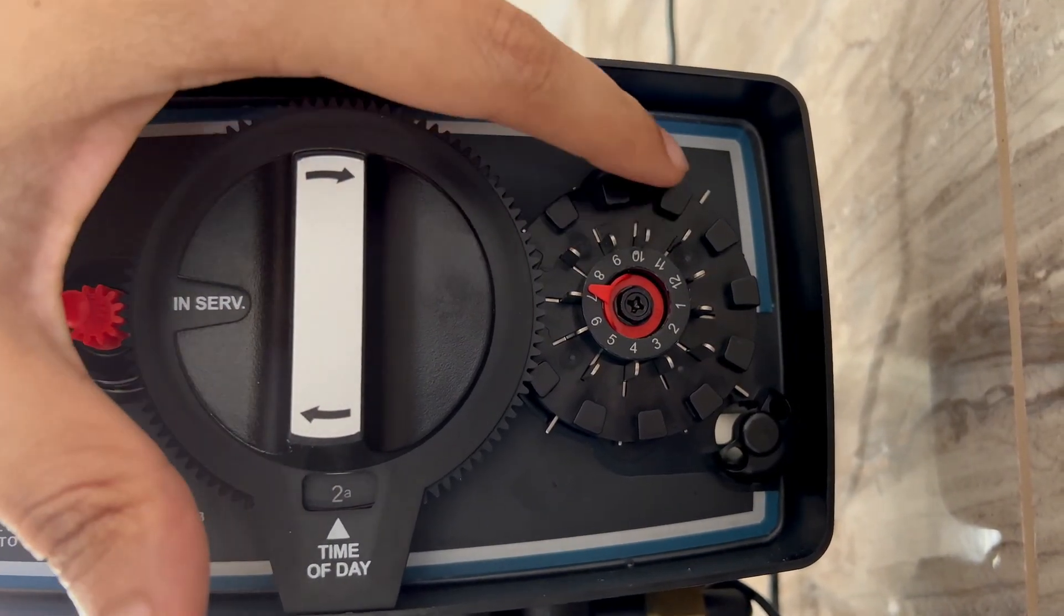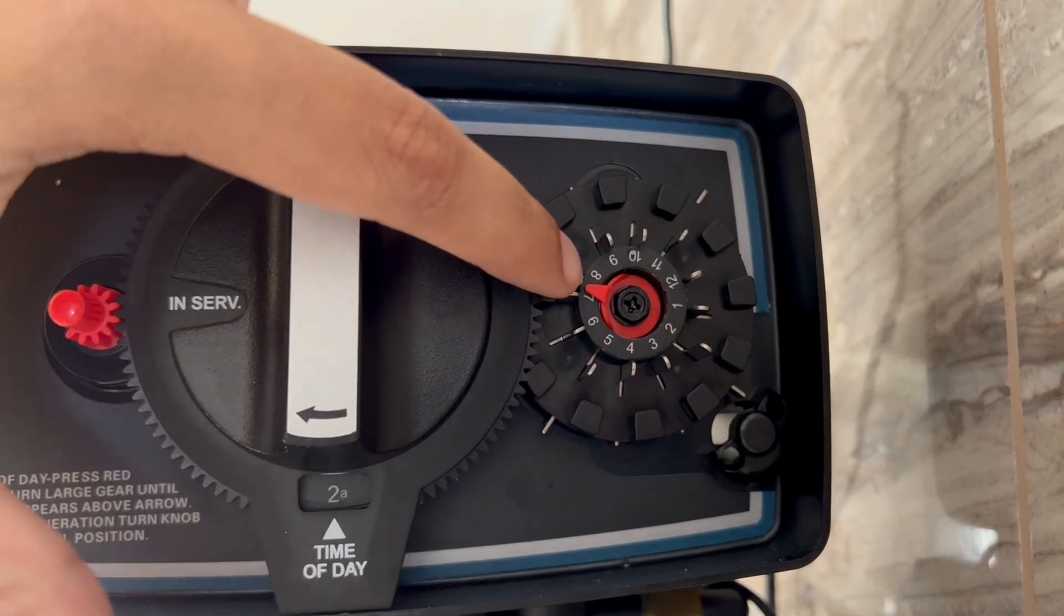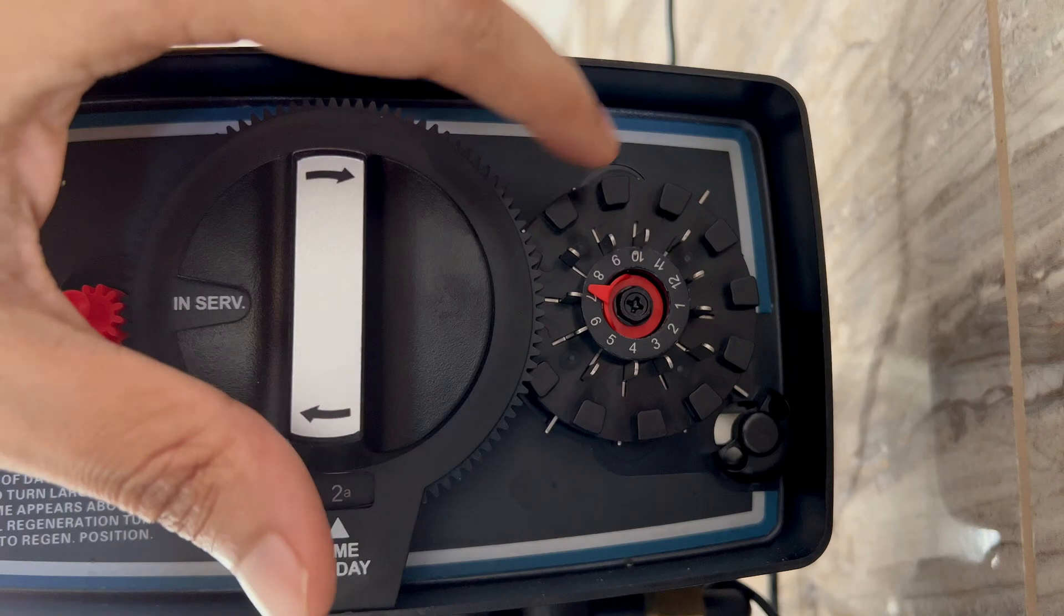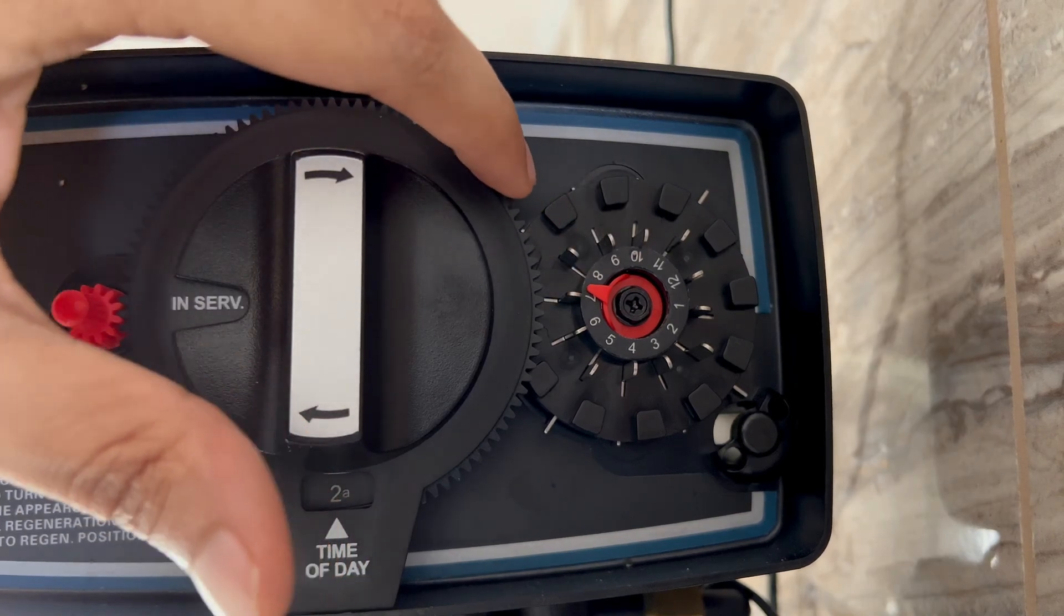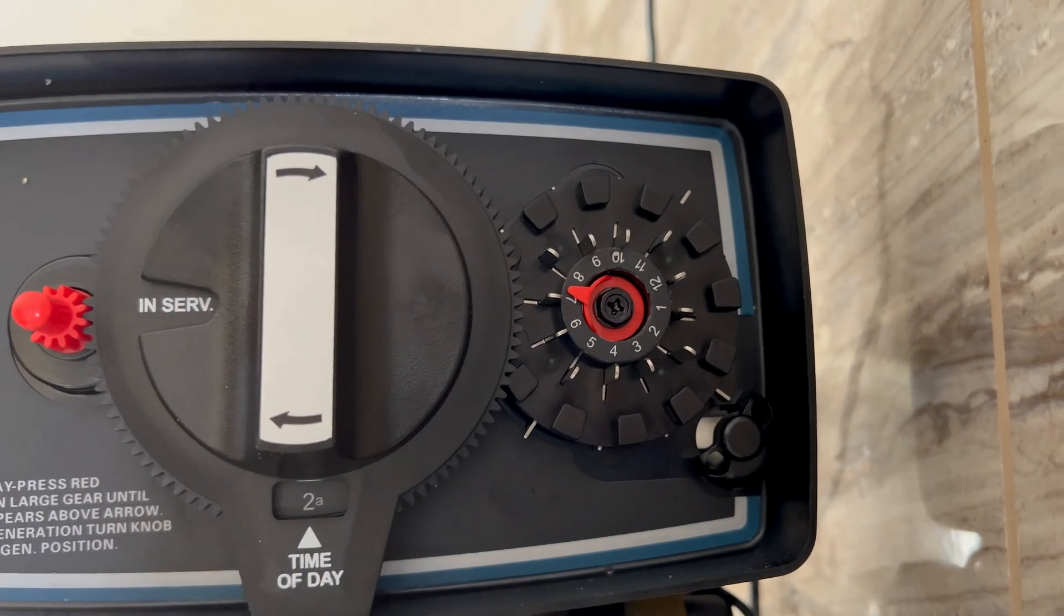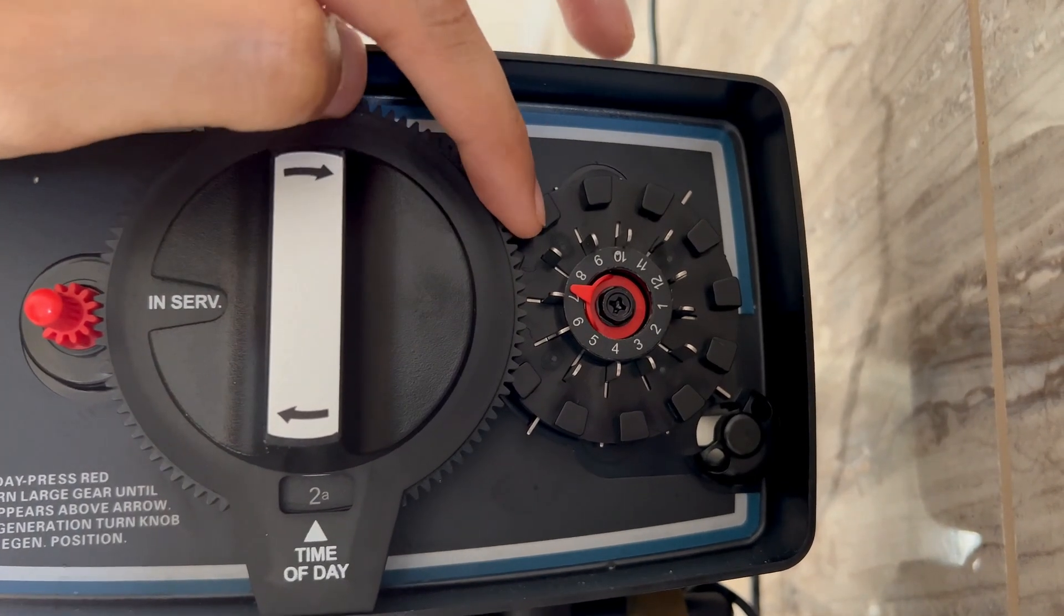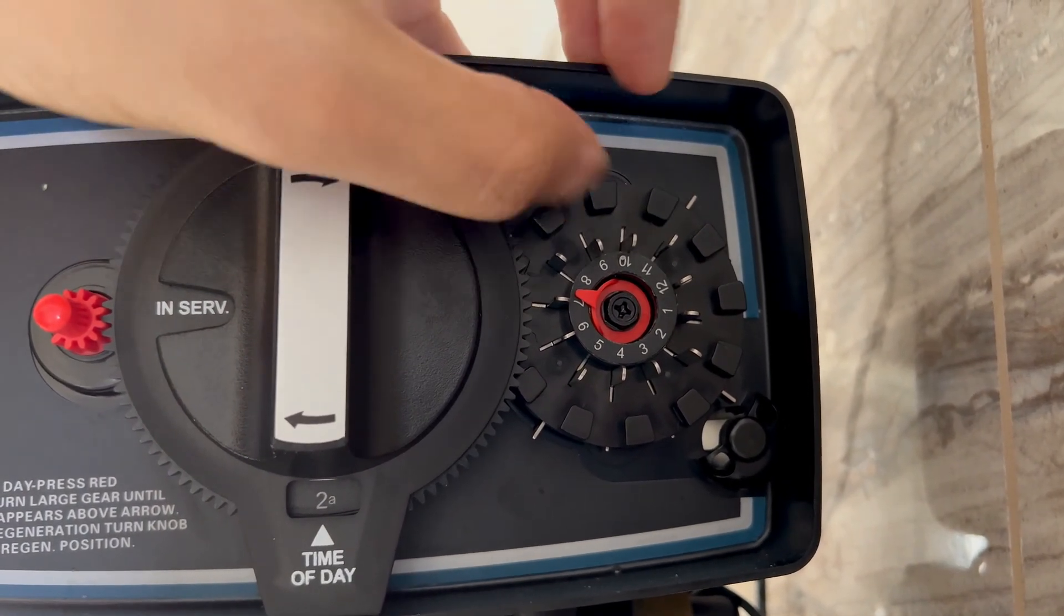If you notice there is a red smaller dial here inside. For example now the next dial that is outside on my machine is the number eight. So when the number eight lands on the red dial at 2 a.m. on that particular day the regeneration will start.